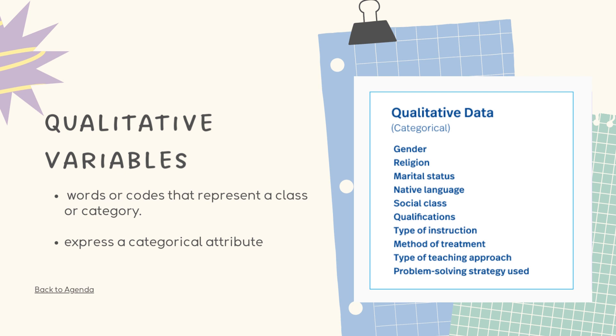These are variables that take on names or labels and can fit into categories. Examples are gender, religion, marital status, native language, social class, qualifications, type of instruction, method of treatment, etc.